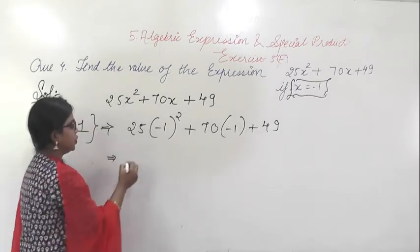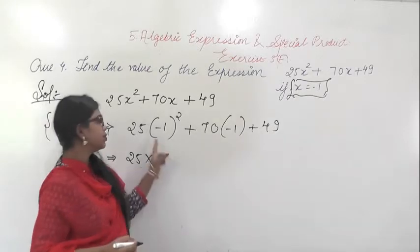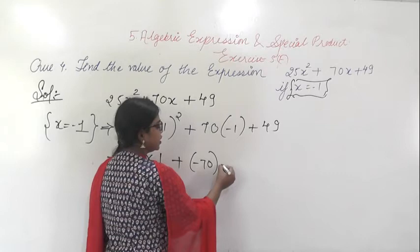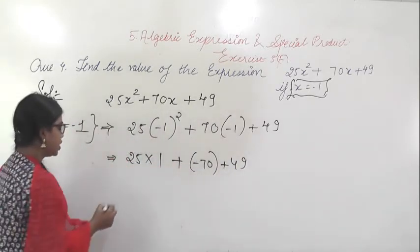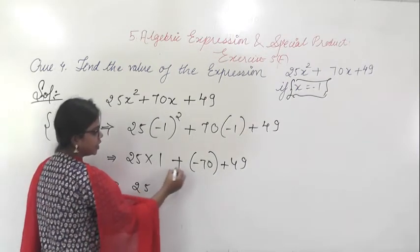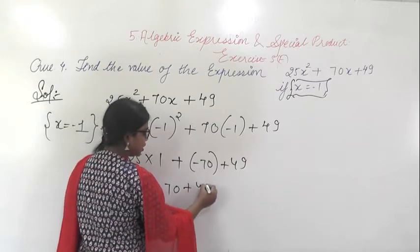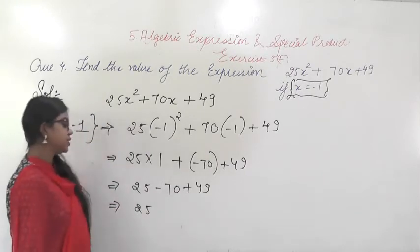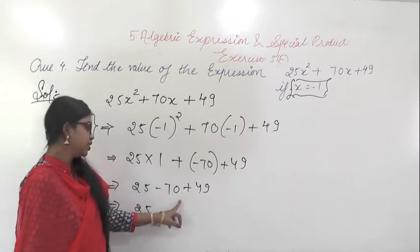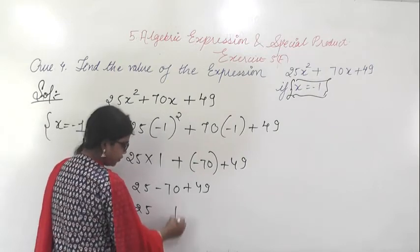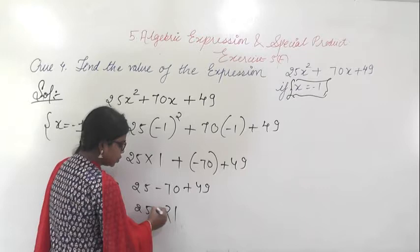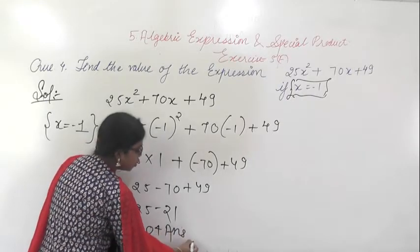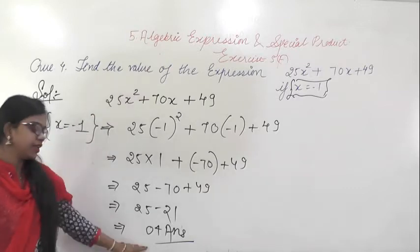So from here you will get 25 × 1 (since (-1)² = 1) plus 70 × (-1), which is minus 70, plus 49. So you will get 25 minus 70 plus 49. On solving: 25 + 49 = 74, then 74 minus 70 = 4. So on solving the expression when x equals minus 1, you are getting 4 as the answer.